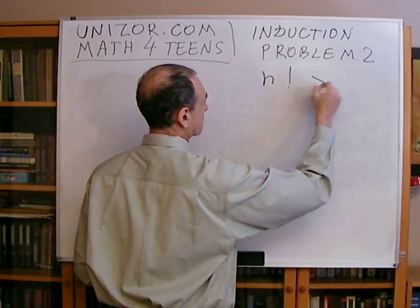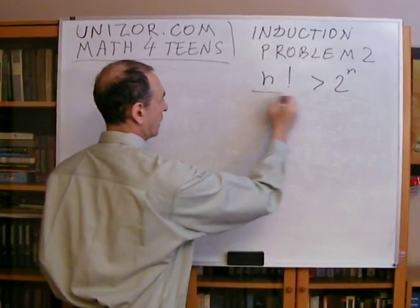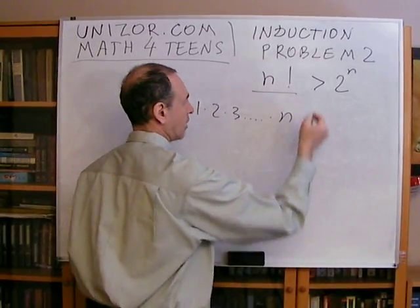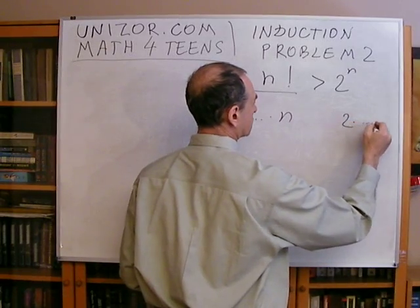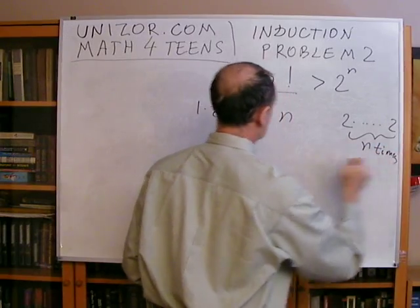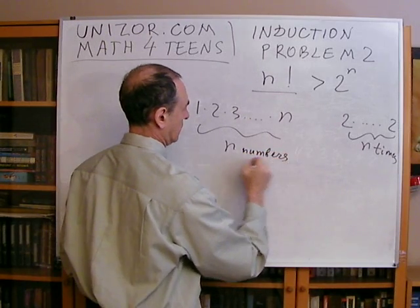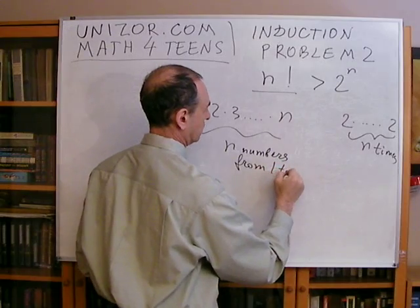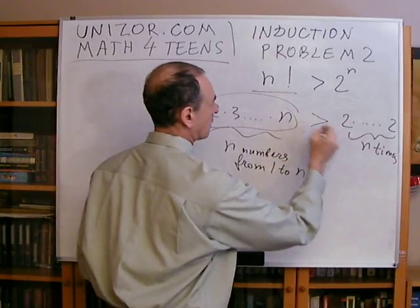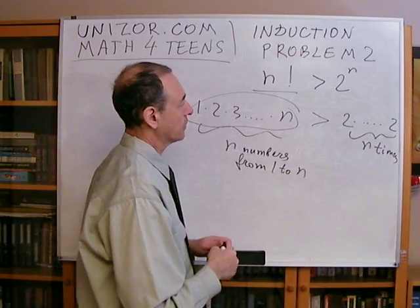I would like to prove an inequality of the following type: that n factorial is greater than two to the power of n. By the way, n factorial is one times two times three, et cetera, times n. And two to the power of n is two times two times two, n times. So the multiplication of n numbers from one to n is greater than n repeated multiplications of the number two.